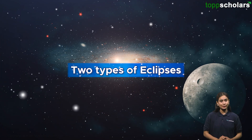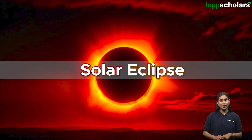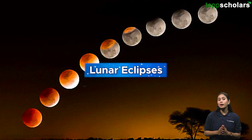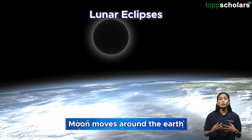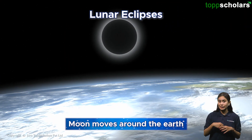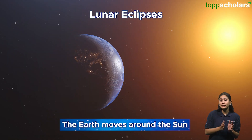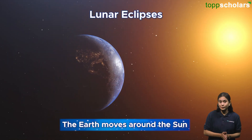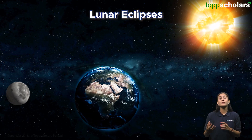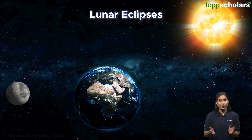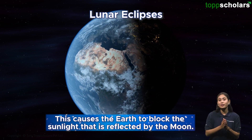There are two types of eclipses: lunar and solar. Let's understand lunar eclipses first. You know that the moon moves around the Earth, but the Earth also moves around the Sun. Sometimes, the Earth moves between the Sun and the moon, causing the Earth to block the sunlight.